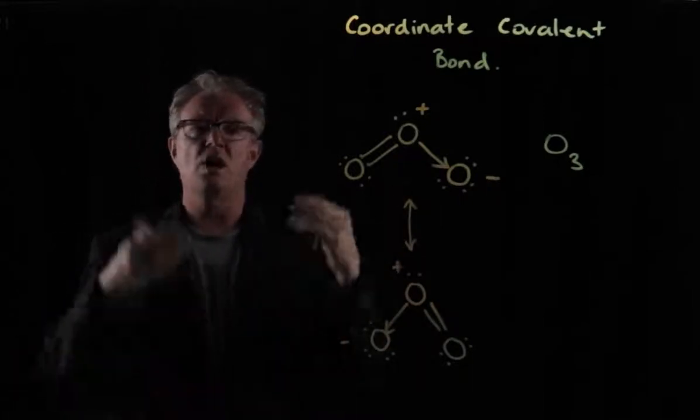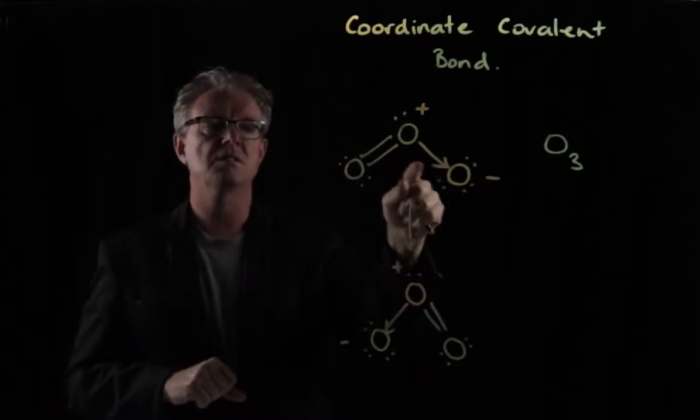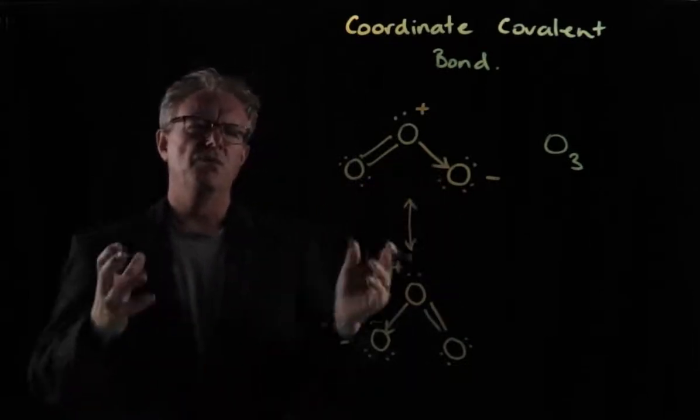But it's important to understand that this concept of resonance is why we have this possibility of writing or drawing two Lewis dot structures. In fact, resonance, I'd try to think of it, is that the bond's going backwards and forwards, flicking between a double and a single, double and a single, double and a single.